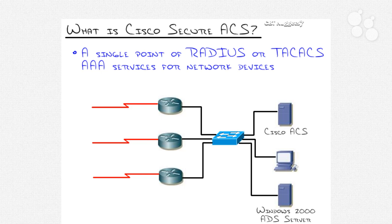That's what we're going to spend the rest of this nugget talking about — all these new terms as we deal in the Cisco security world. As you can see on the whiteboard, we have the Cisco ACS server sitting here, and down here is a Windows 2000 Active Directory server. Typically these are two different worlds — the Windows 2000 people do their thing and don't talk to the Cisco people, and the same goes the other way.